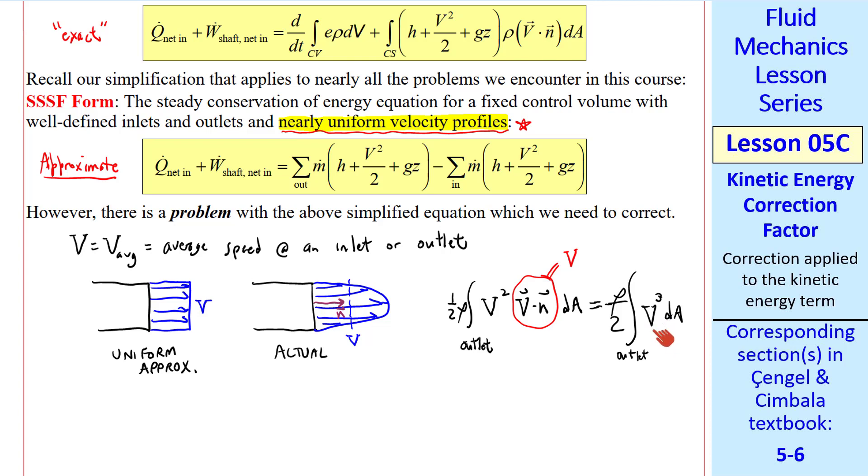The problem is that this is nonlinear, but we use the average speed to come up with this equation and this term. Note that ṁ is ρvA. So one of these v's is embedded in ṁ, and the other two are in this term. Mathematically, this integral over the outlet is not equal to ρvA times v² over 2, which is what we have here. These are not the same.